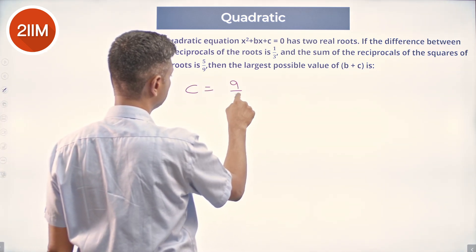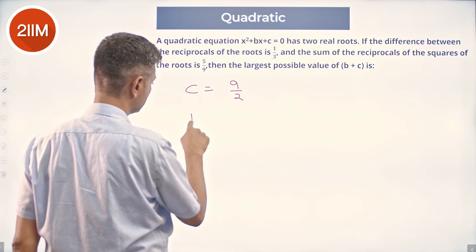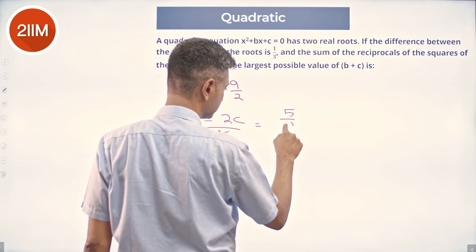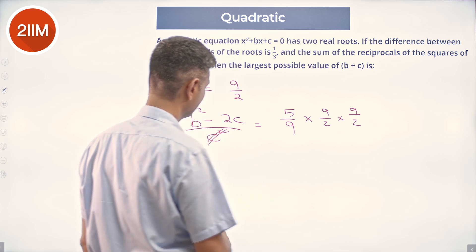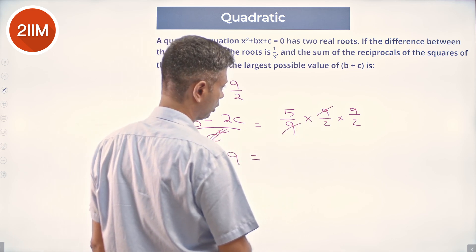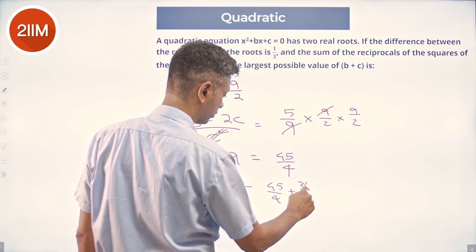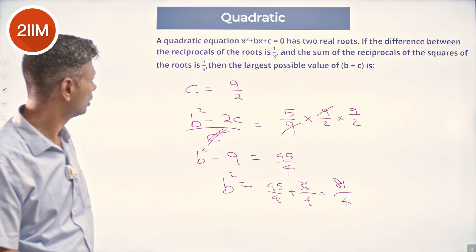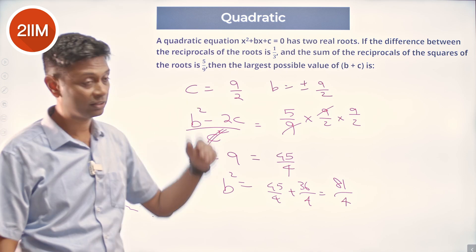We have c = 9/2. Substituting into (b² − 2c)/c² = 5/9: multiply through by c² = 81/4, giving b² − 9 = 45/4, so b² = 45/4 + 36/4 = 81/4, meaning b = ±9/2. With c = 9/2 and b = +9/2, the largest possible value of b + c = 9/2 + 9/2 = 9.